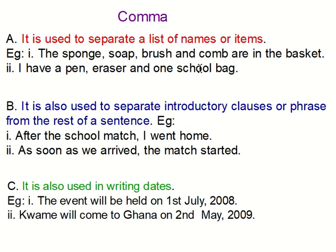The comma is also used to separate introductory clauses or phrases from the rest of a sentence. In a sentence, you may have a clause or phrase introducing the sentence, and we use a comma to separate it. For example: 'After the school match,' — there's a comma — 'I went home.' So 'after the school match' is a phrase, and after the phrase there's a comma, then the rest of the sentence continues: 'I went home.'